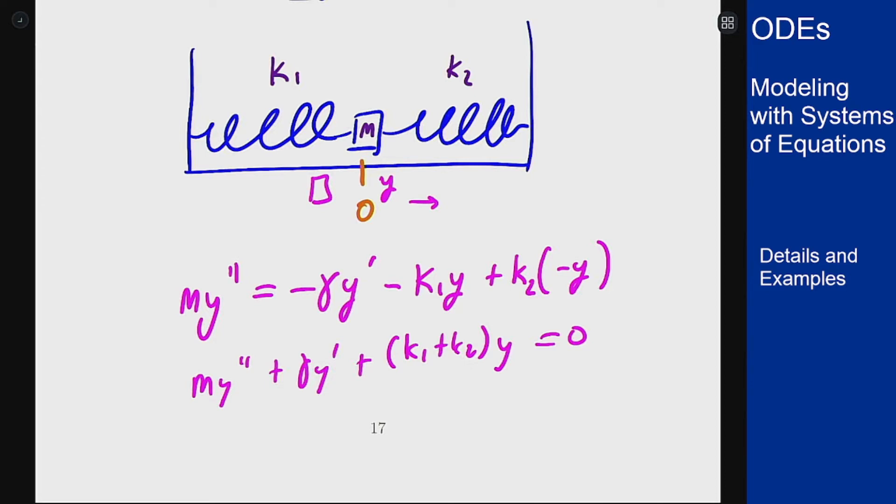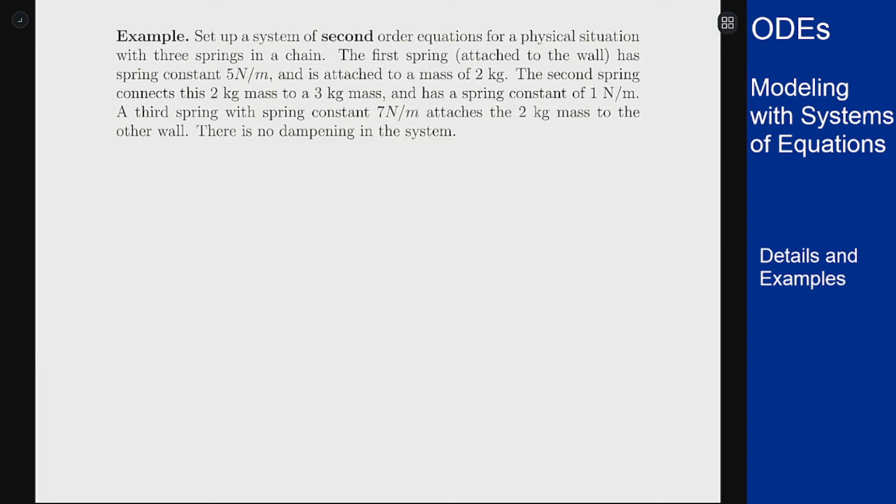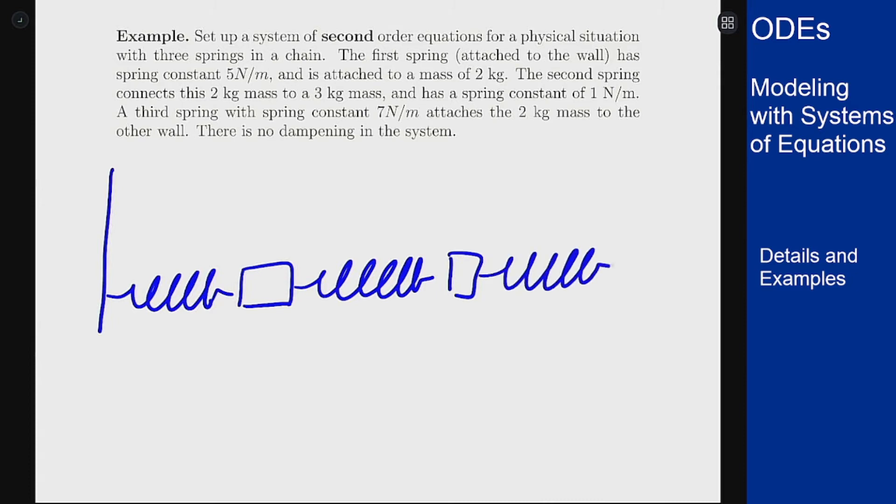This worked out nicely for one mass, but you can do the same thing with multiple masses interacting. Here's an example I want to set up a system of second order equations for a physical situation with three springs in a chain. I have the first spring that's attached to a wall and attached to a mass, another spring, a mass, another spring, and a wall over here. The problem says that this first spring has a constant 5 newtons per meter, the mass here is 2 kilograms, the second spring is 1 newton per meter, second mass is 3 kilograms, and then we have 7 newtons per meter on this side attaching to the wall.